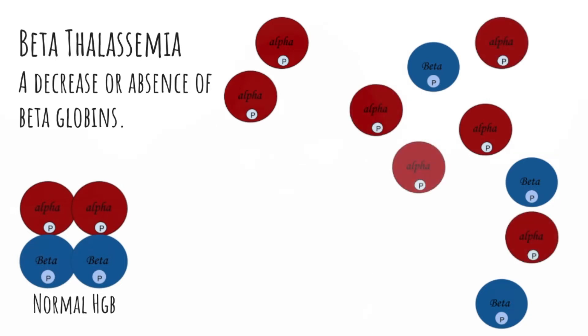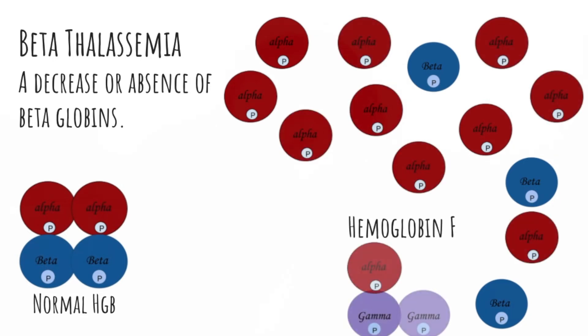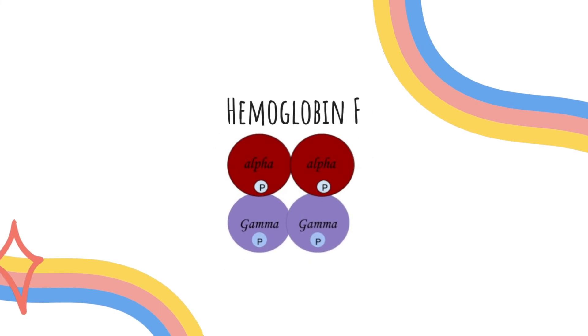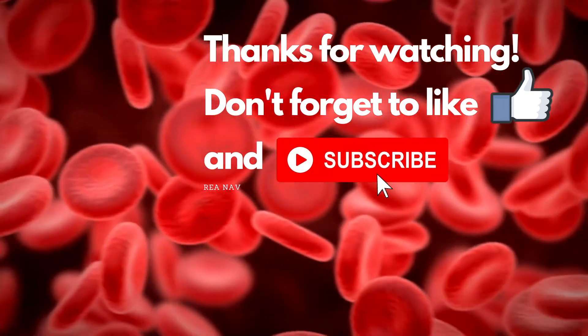Conversely, if you have beta thalassemia, you're not producing enough beta chains and your alpha chains keep getting produced, so there's an imbalance — an abundance of alpha chains and a decrease or absence of beta chains. In beta thalassemia, the excess of alpha chains forms precipitates that can kill RBC precursors, causing ineffective erythropoiesis. In homozygous beta thalassemia, there is an increased presence of hemoglobin F, because without beta chains, the gamma chains step up — and that is a diagnostic clue of beta thalassemia.